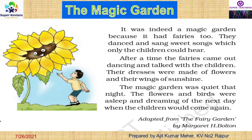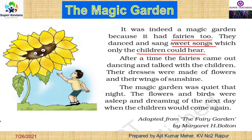It was indeed a magic garden because it had fairies too. They danced and sang sweet songs which only the children could hear. There were different fairies, and they sang sweet songs audible to the children only. After a time, the fairies came out dancing and talked with the children. Their dresses were made of flowers and their wings were made of sunshine.